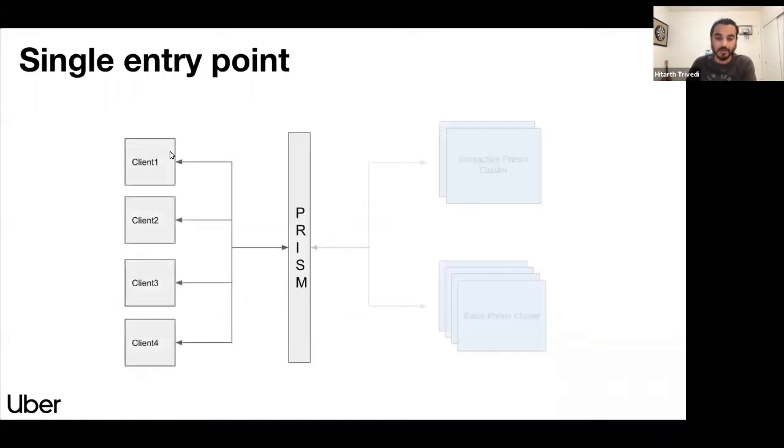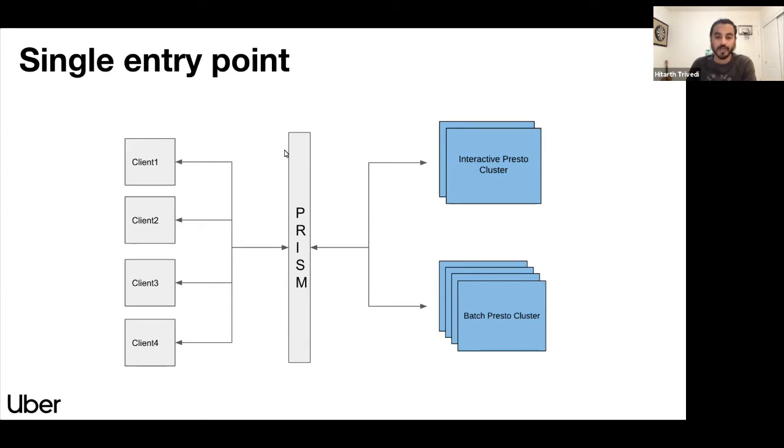So that is why we came up with a single entry point. We call it Prism. So all the clients are configured to talk to a single service Prism and Prism knows which client should talk to which particular cluster. And it also knows which cluster is up and running. So it can manage the resources in a proper way. So basically Prism is acting like a cluster of clusters, all our Presto clusters. So with Prism, we can do a lot of stuff like resource management, query gating and even monitoring of our entire Presto ecosystem.